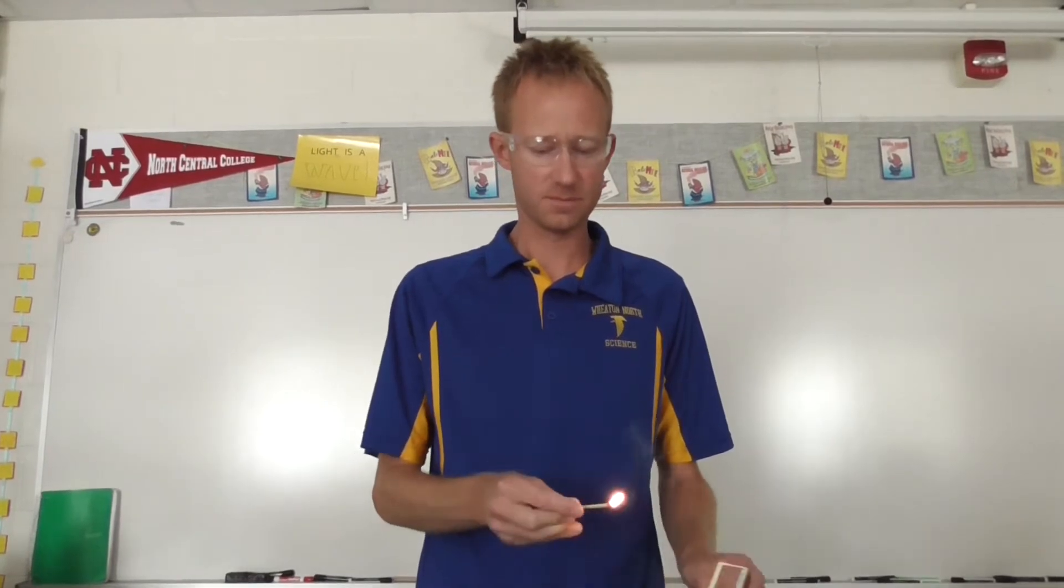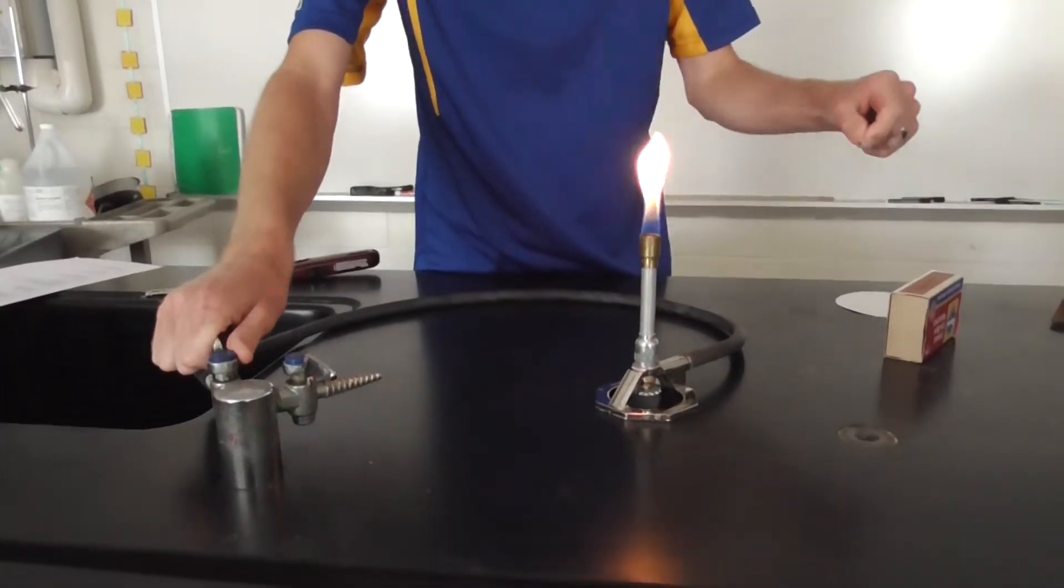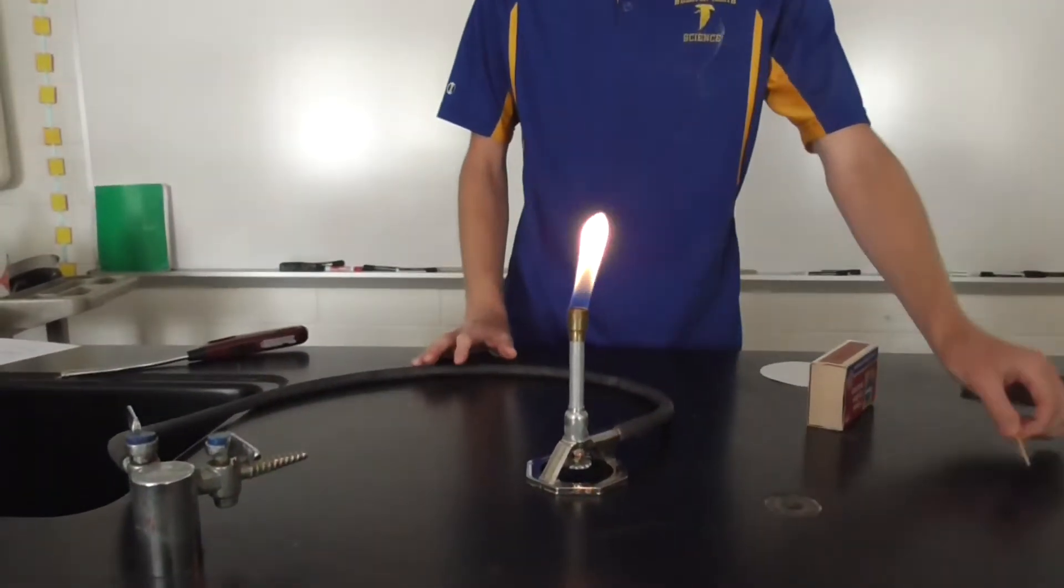So remember, first light the match, then turn on the gas jet. Light the match. You can turn the gas jet on all the way. You don't have to turn it on slowly. And you can set the match on top of the counter.